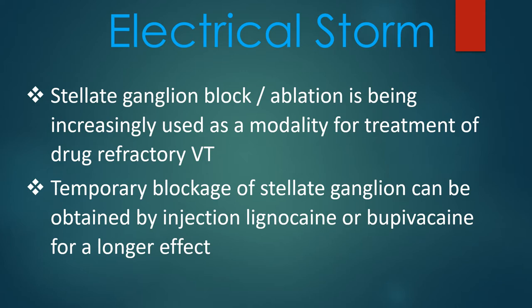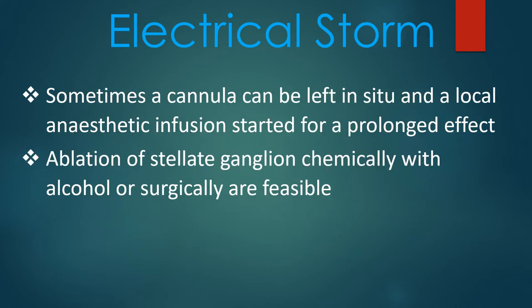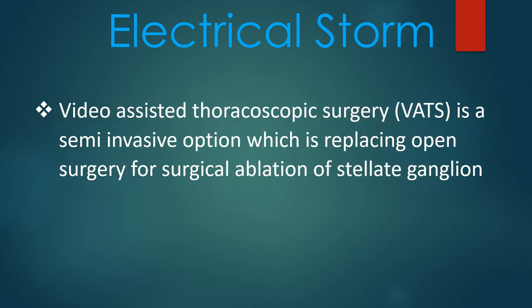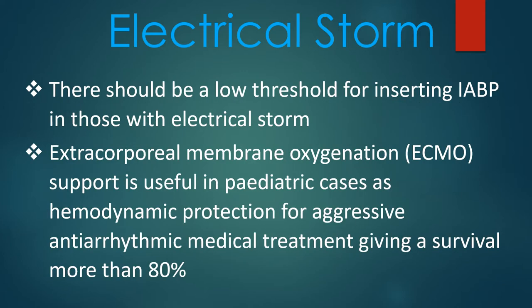Temporary blockage of the stellate ganglion can be obtained by injection of lignocaine or bupivacaine for a longer effect. Sometimes a cannula can be left in situ and a local anaesthetic infusion started for prolonged effect. Ablation of stellate ganglion chemically with alcohol or surgically are feasible. Video-assisted thoracoscopic surgery is a semi-invasive option replacing open surgery for surgical ablation of the stellate ganglion.